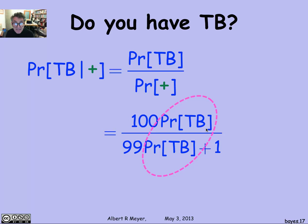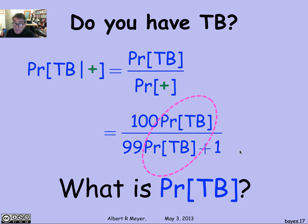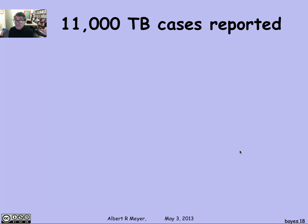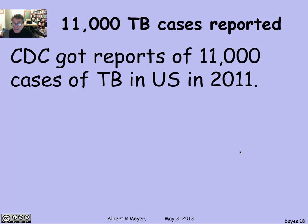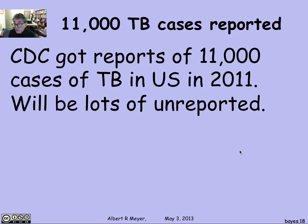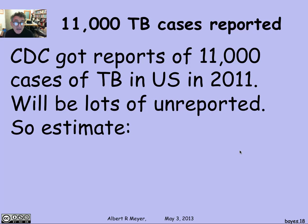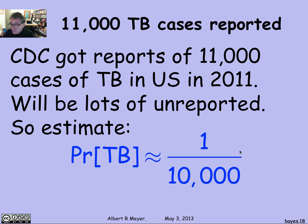The key unknown in this formula is the prior probability that you have TB — the probability that a random person in the population has TB, independent of the test. There were 11,000 cases of TB reported in 2011 according to the CDC in the United States, and there are likely many unreported cases since many people don't know they have the disease. Estimating based on a US population of around 350 million, the probability of TB is about one ten-thousandth.